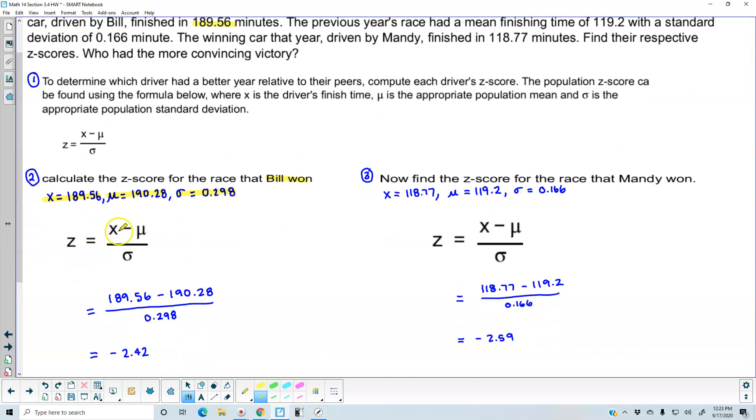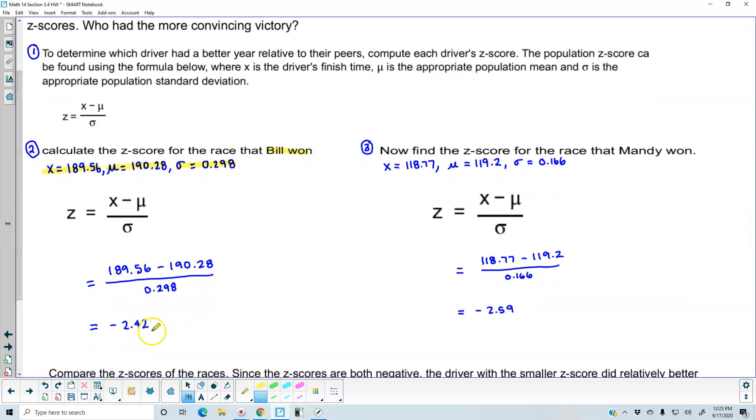So we're going to plug it into our formula. We have z, which is equal to the data value 189.56, minus the population mean, which is 190.28, divided by the population standard deviation, which is 0.298, which gives us a z-score of negative 2.42.